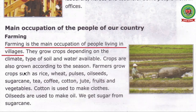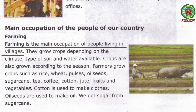Farmers grow crops such as rice, wheat, pulses, oil seeds, sugar cane, tea, coffee, cotton, jute, fruits and vegetables. What are the different crops grown in India? The different crops grown in India are rice, wheat, pulses, cotton, coffee, fruits and vegetables.